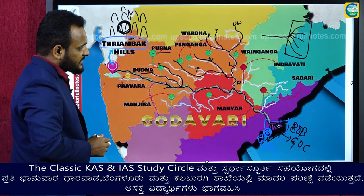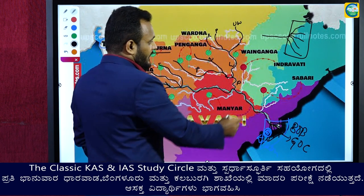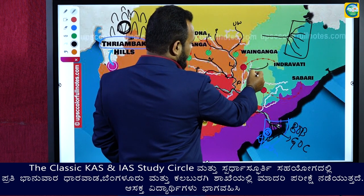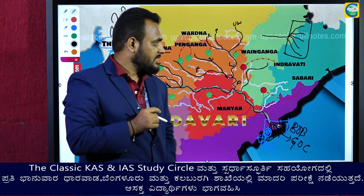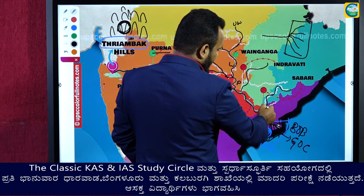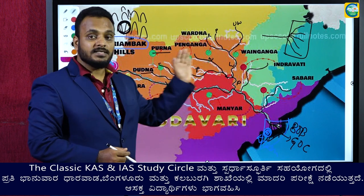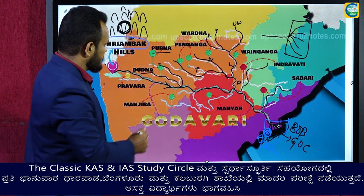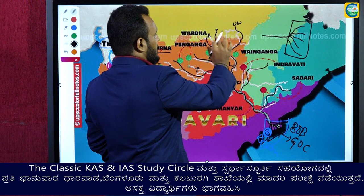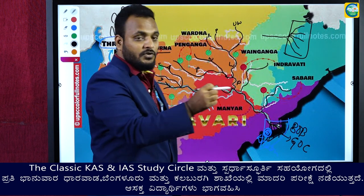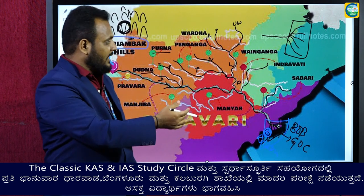The last two left bank tributaries of Godavari are Indravati, originating from Jharkhand and Chhattisgarh, and Sabari. So the left bank tributaries of Godavari are: Dudna, Puna, Penganga, Wardha, Wainganga — which integrate to form the largest tributary Pranita — and then Indravati and Sabari.